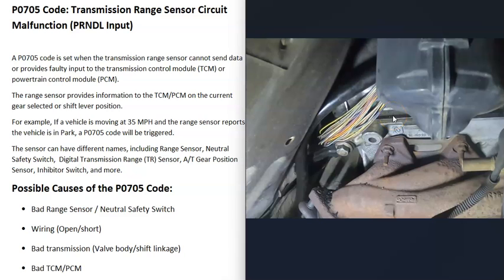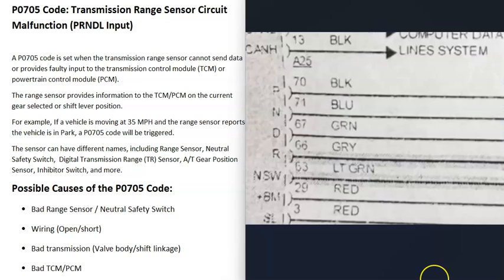The next thing that could cause this is the wiring going to the switch. If there's any open, short, or bad connection, it will cause the same symptoms as a bad sensor. You can check the wires inside the harness for physical damage — sometimes wires can get loose, rub against the exhaust, get burnt spots, and so on.